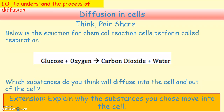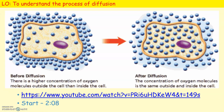Next task: which substances do you think will diffuse into the cell or out of the cell? Remember the chemical equation for respiration. Oxygen will diffuse into the cell, and carbon dioxide produced after respiration will diffuse out of the cell. You can pause the video now to watch the next clip to help with your understanding.